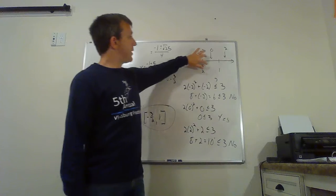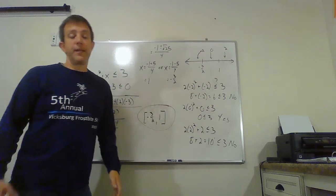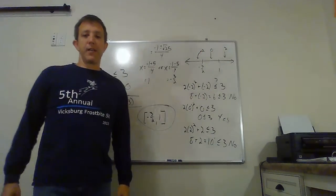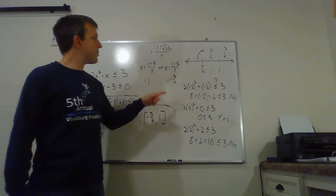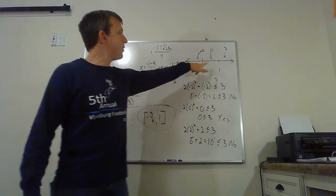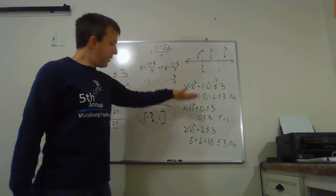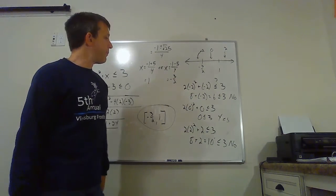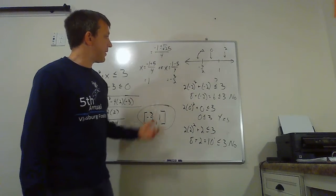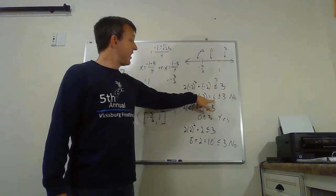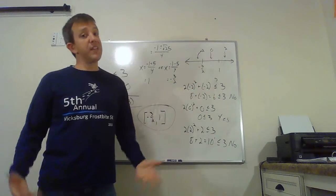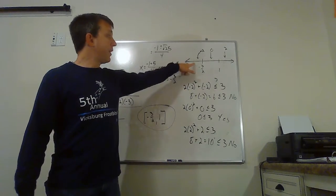You can see I have three distinct intervals here. That's going to happen a lot with these quadratic inequalities. Out to the left, I picked negative two. In the middle, I chose zero. And out to the right, I chose positive two. You can see the work here that I did plugging in those numbers. When I plugged in negative two, I got that six is less than or equal to three. That's not true. So I am not using that interval.